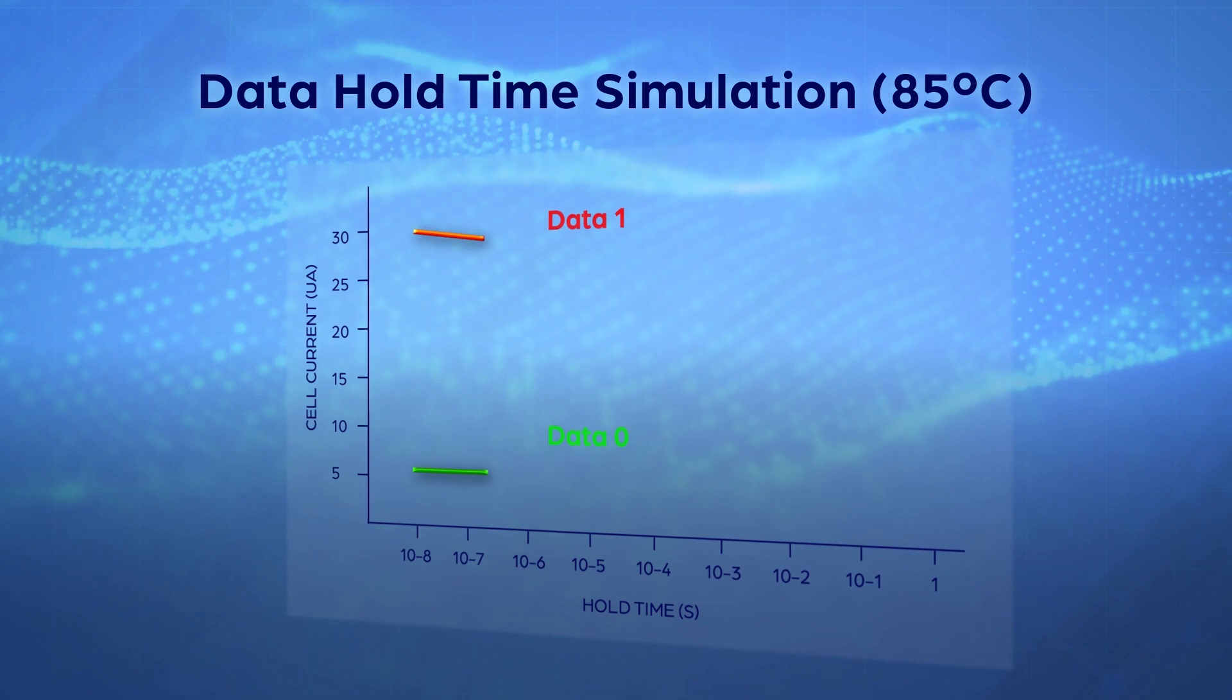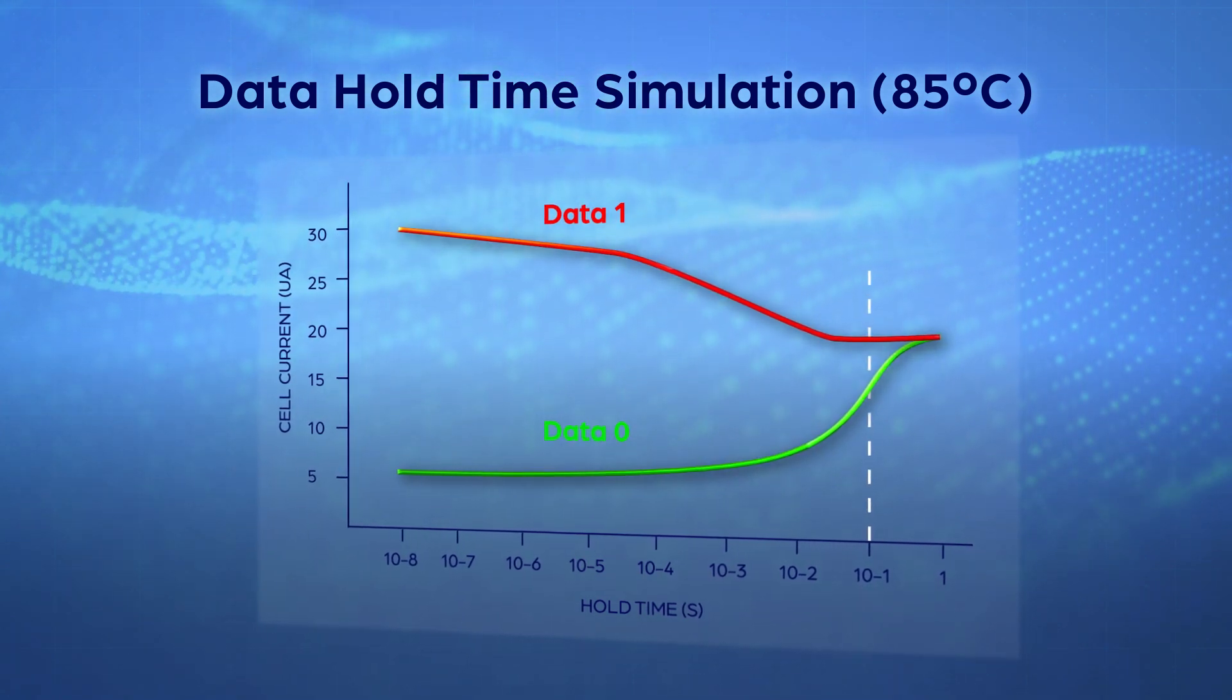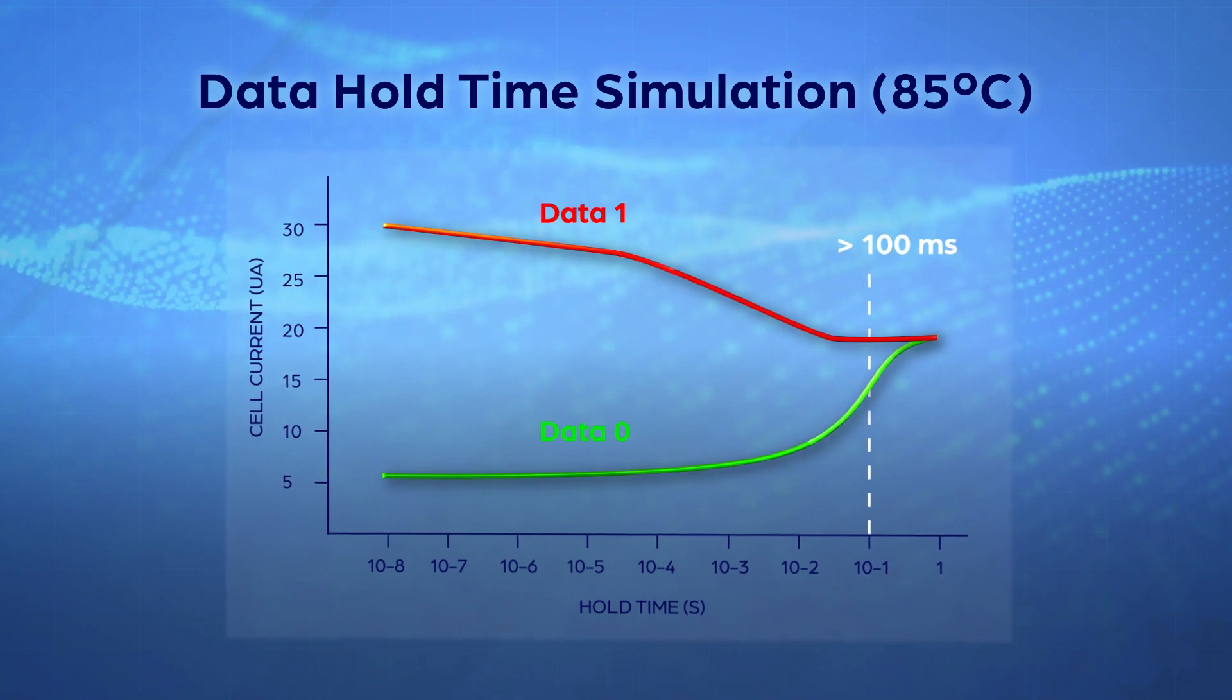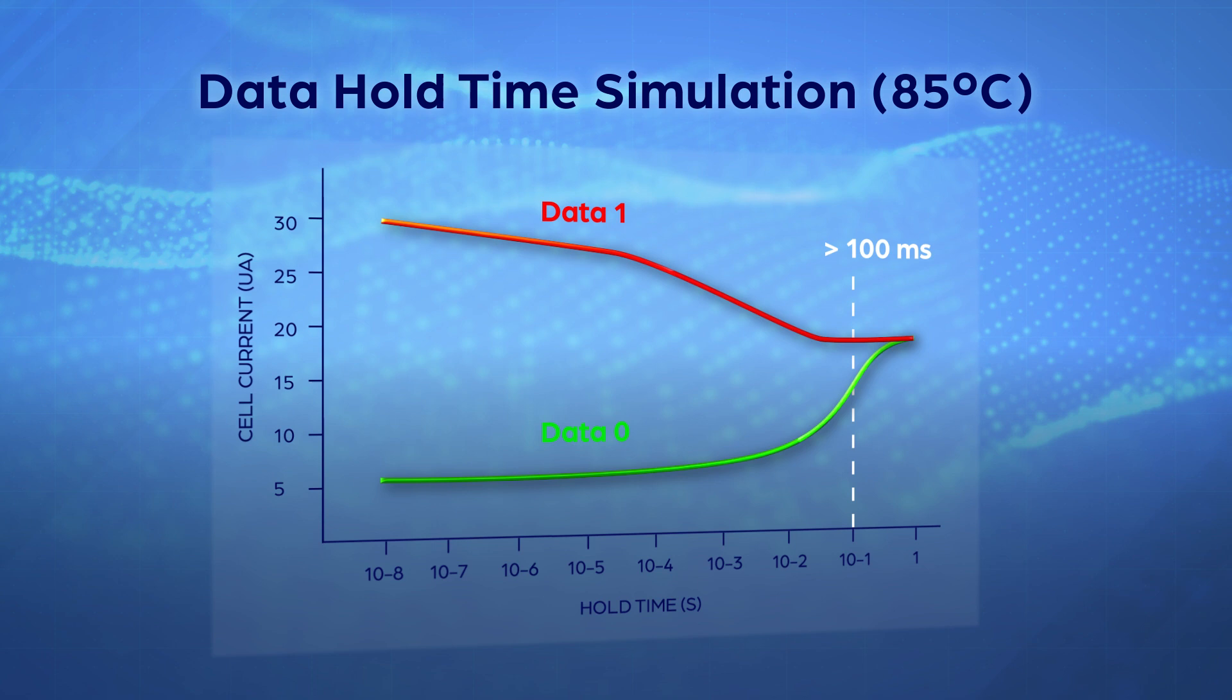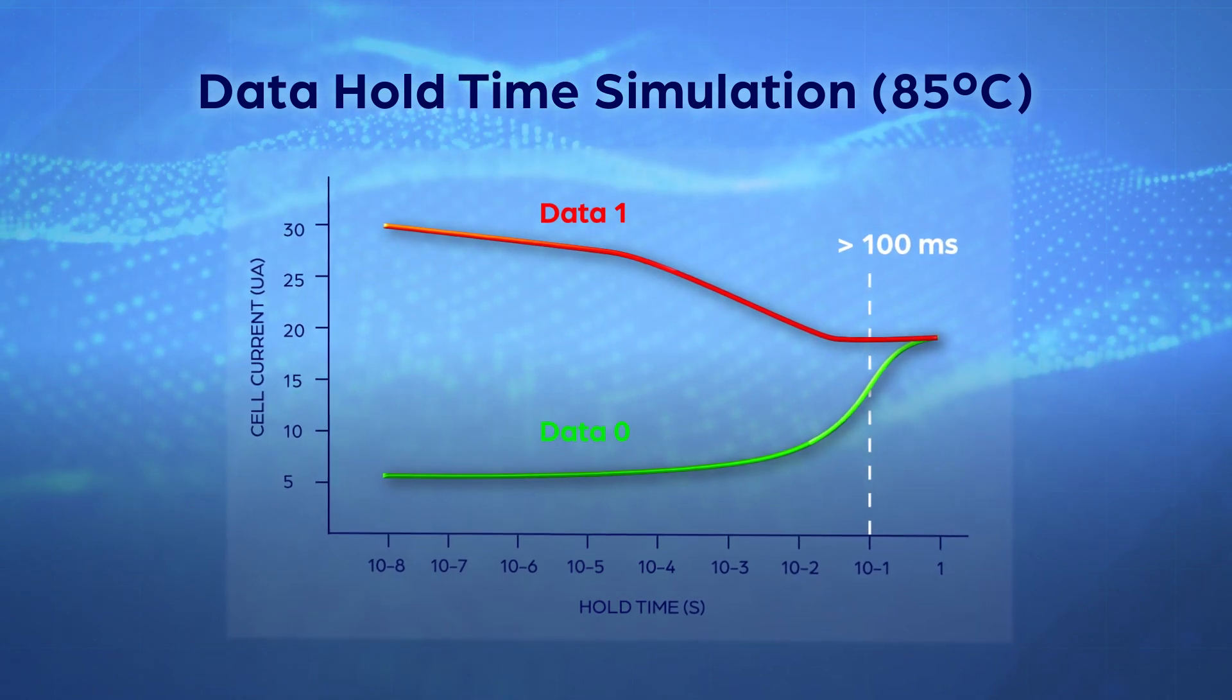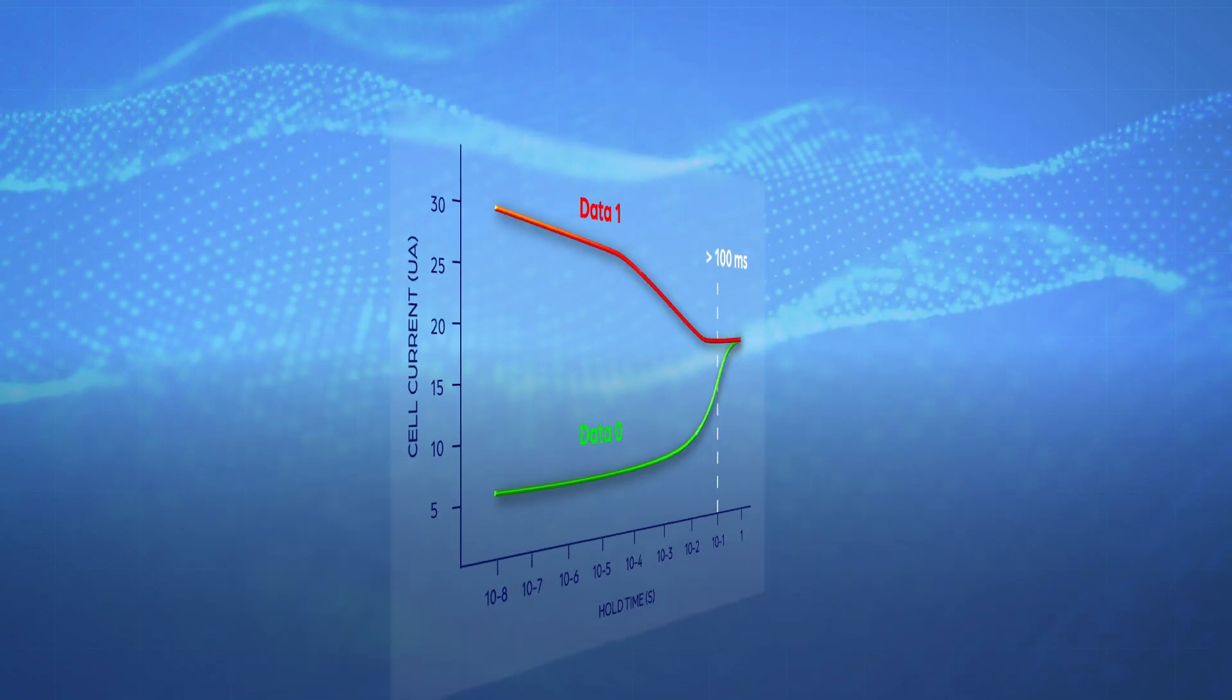Another important requirement for DRAM is data retention hold time. With the dual gate structure, TCAD simulation shows 3D XDRAM cells can achieve longer than 100 millisecond retention time under 85 degrees Celsius, meeting industrial grade DRAM requirements.